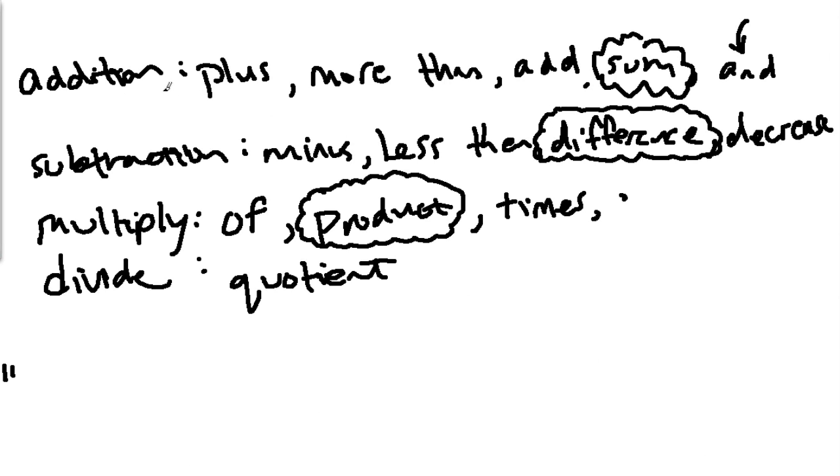Here's some common keywords for each operation. Plus, more than, add, sum, and end all refer to addition. The word sum is really commonly used in addition. And the word end is almost always indicating addition, except in probability.